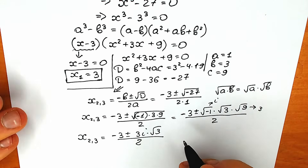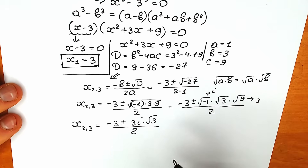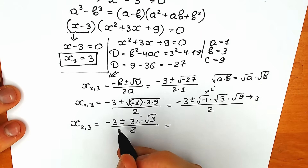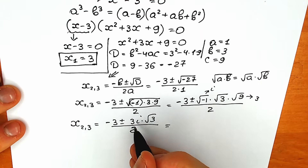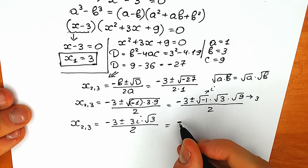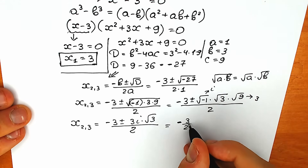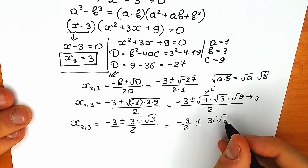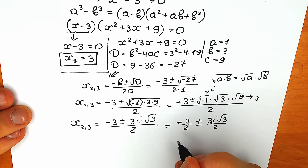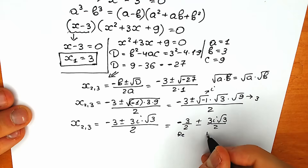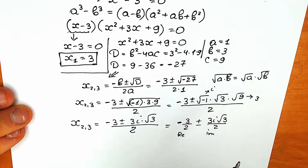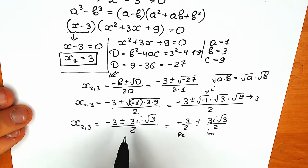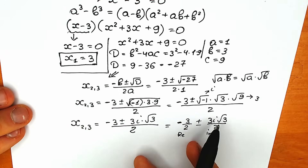We can split this into real and imaginary parts by dividing both parts by 2. So we have minus 3/2 as the real part, plus or minus 3i√3 over 2 as the imaginary part. The first root is a real number root, and the second and third roots are complex roots.